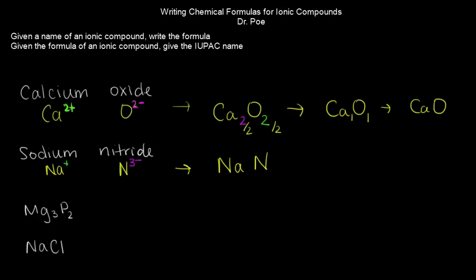This 3 from the nitride is going to become the number of atoms of the sodium. And this 1 of the charge of the sodium becomes the number of atoms of the nitride. So when we simplify this, we don't write the number 1, Na3N. We can't divide this by 3. That's fine. So this is our final answer there.